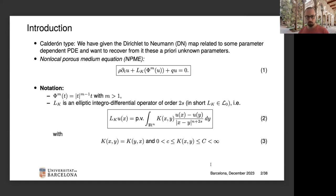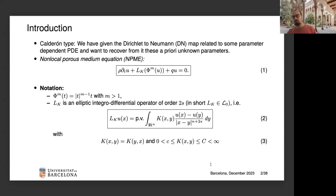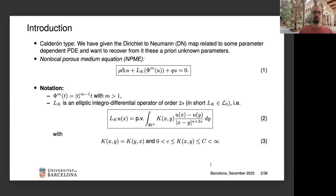The terminology 'non-local' comes from the fact that the operator L_K is a non-local operator. More precisely, I'm assuming throughout the talk that it is an elliptic integral-differential operator of order 2s. For sufficiently regular functions u, it acts as the principal value integral given in equation 2. The kernel function K(x,y) is assumed to be symmetric in both variables and uniformly elliptic in the sense given in equation 3.